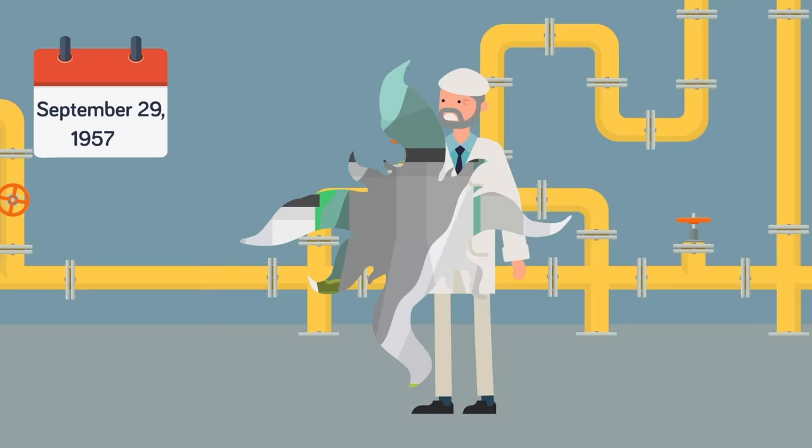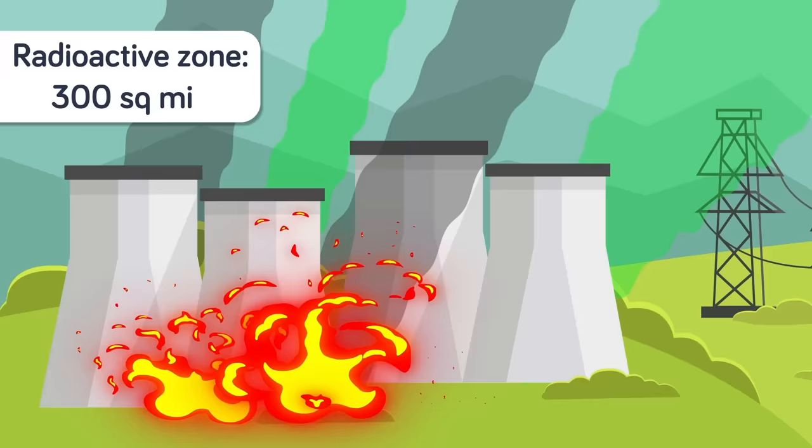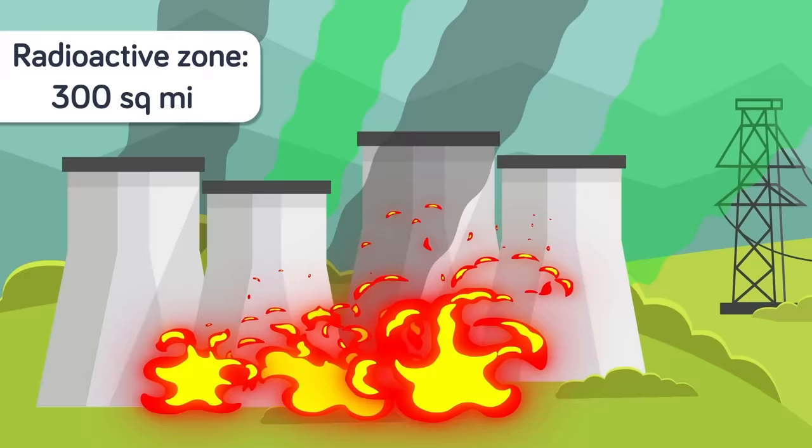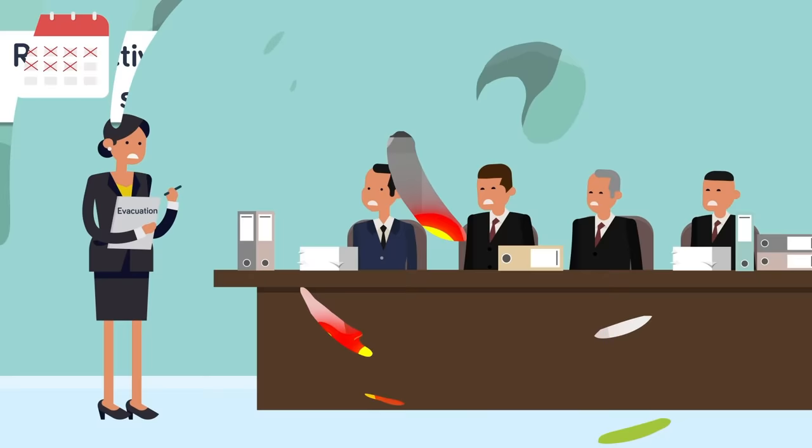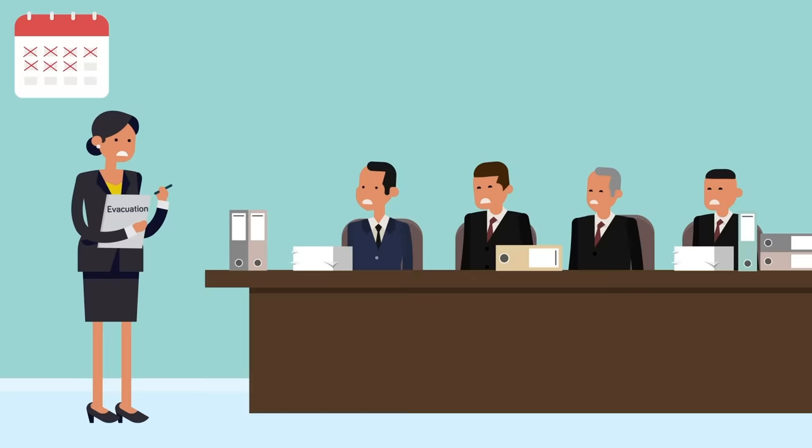The reactor exploded, sending a massive cloud of radioactive particles into the air. Unlike the Chalk River disaster that was somewhat contained, these particles swept across the Russian landscape, contaminating entire towns as wind currents carried them across the country. The deadly particles spread over 300 square miles. The Soviet government waited an entire week before declaring a state of emergency and evacuating the 10,000 residents who had been in the path of the radioactive cloud. But at that point, it was too late.